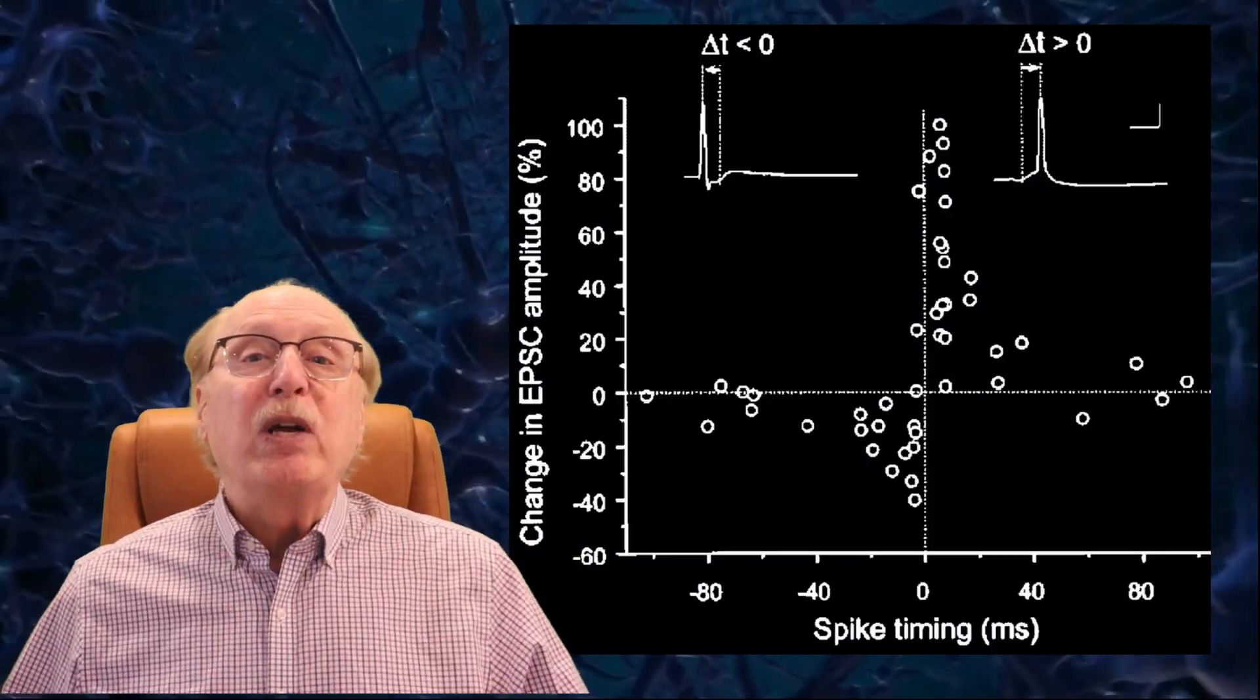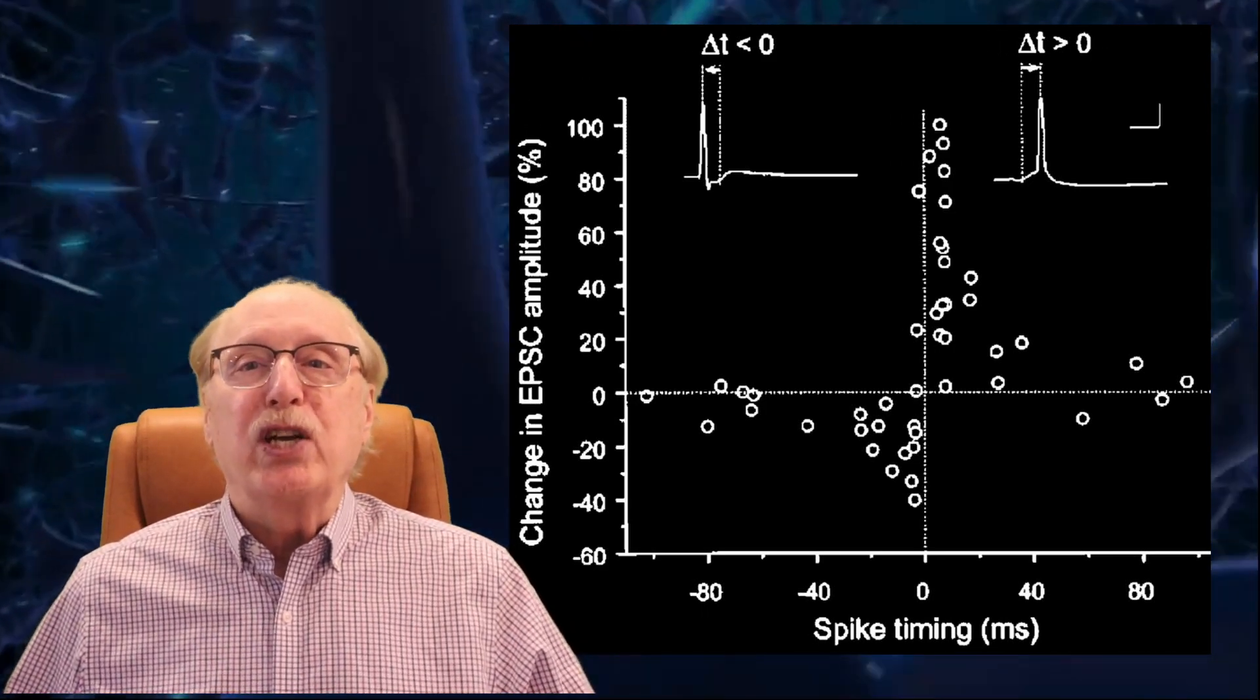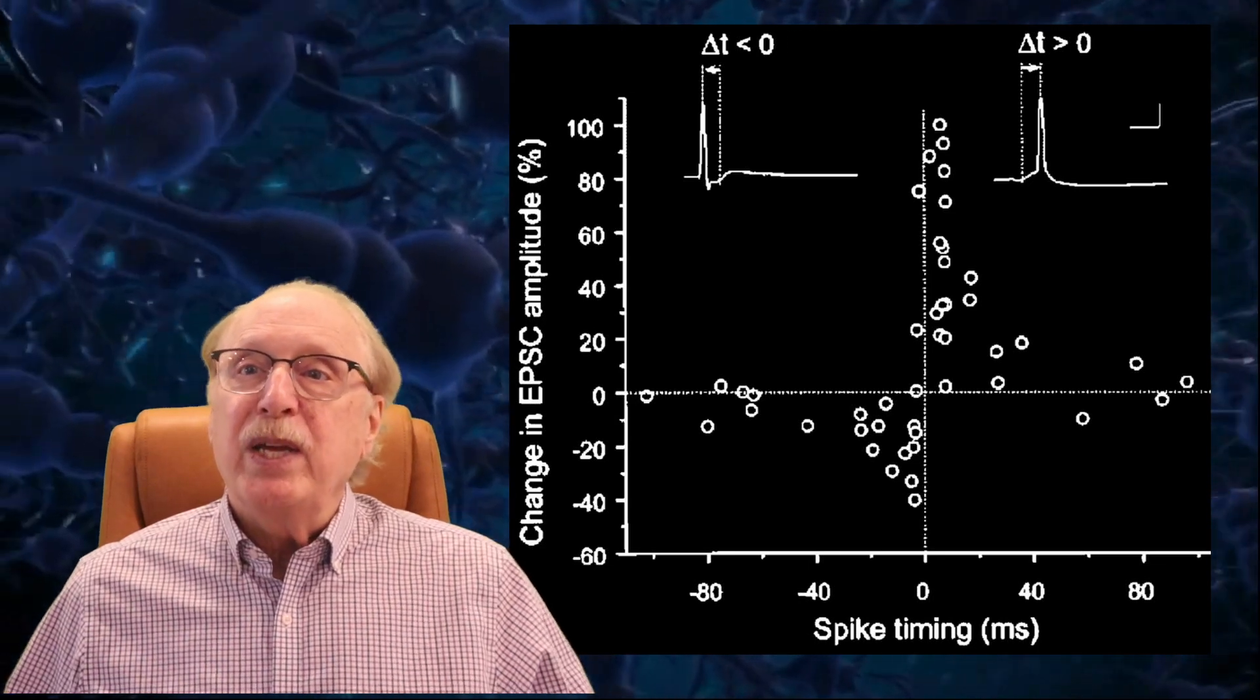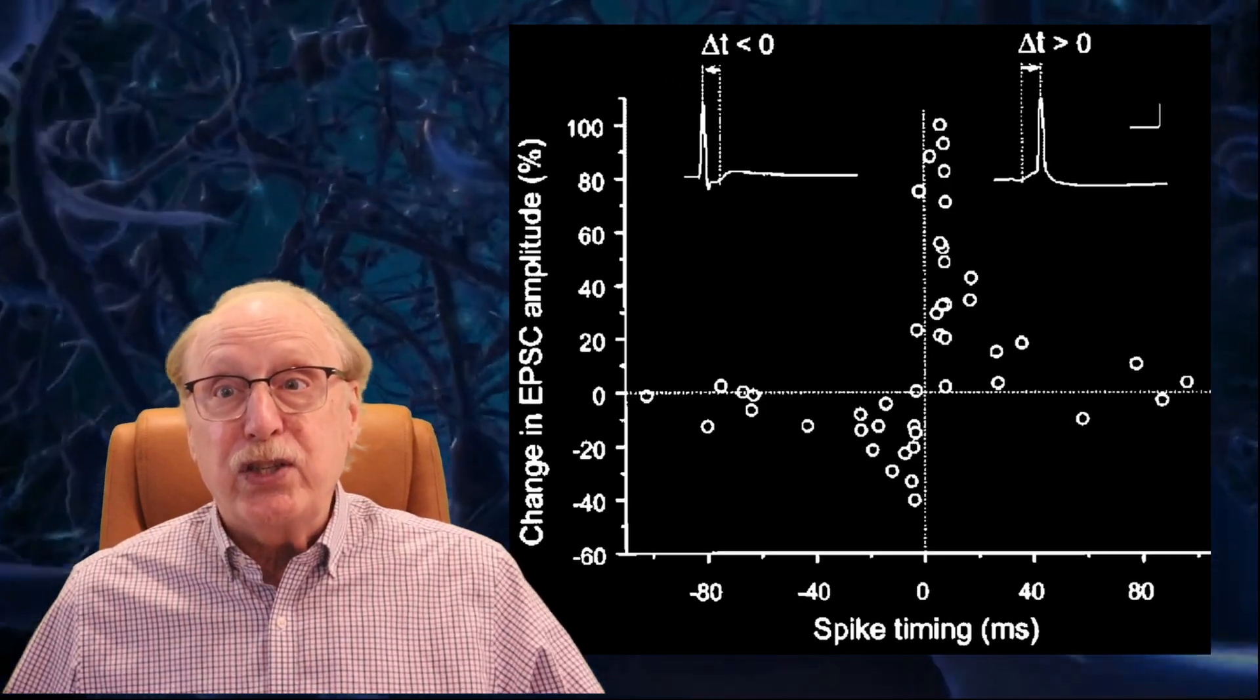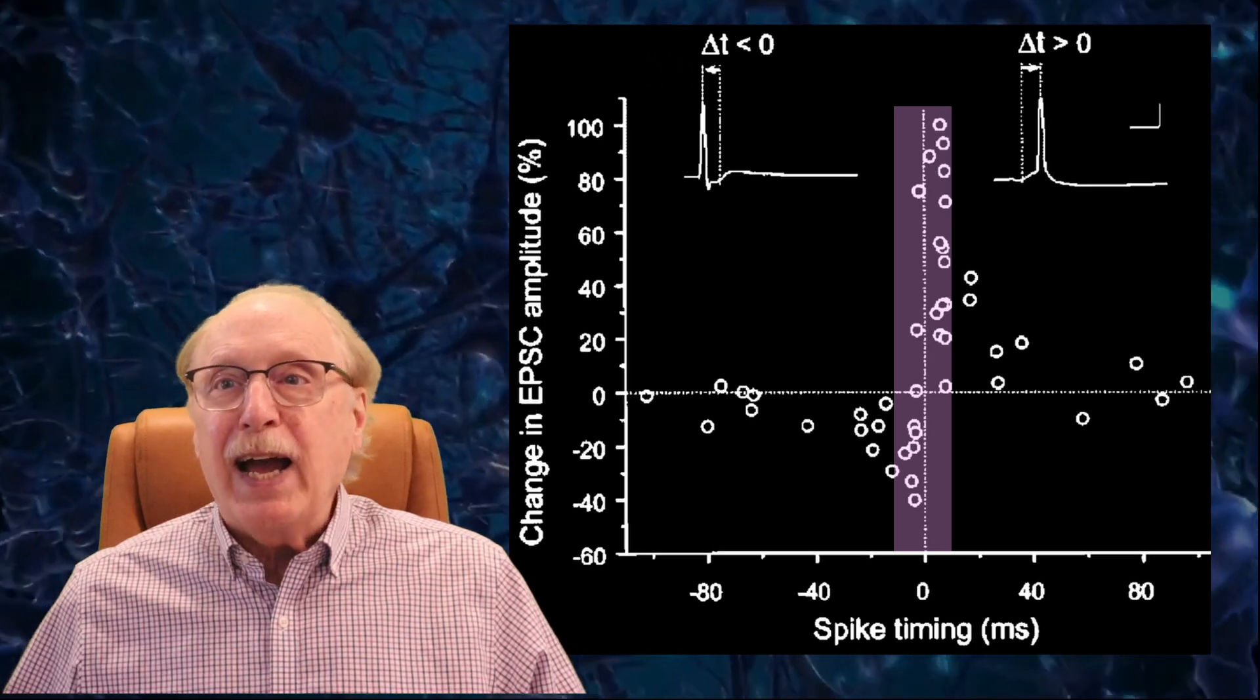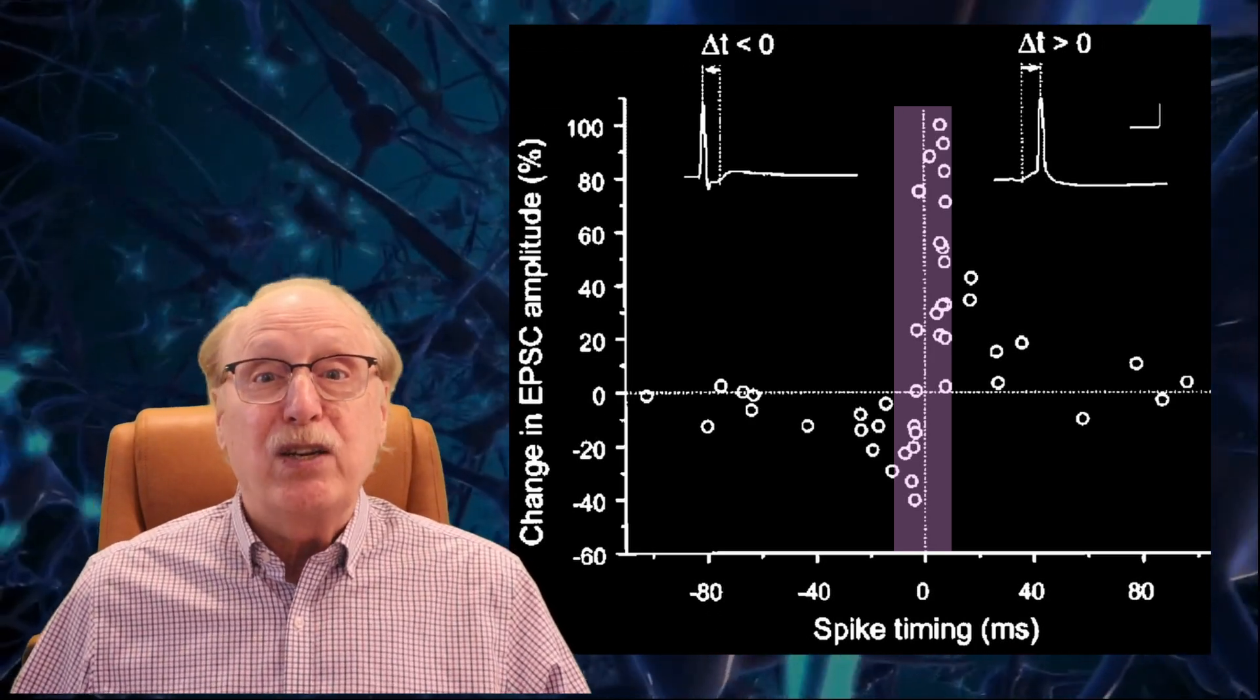But there are some limitations. When we look at the experimental data, and this is the best image I could find, you see a large amount of scatter. In this graph, the relative spike timing is plotted horizontally against the relative change in the synapse weight. Note that the lion's share of the action happens within 10 ms of the spikes being coincident.